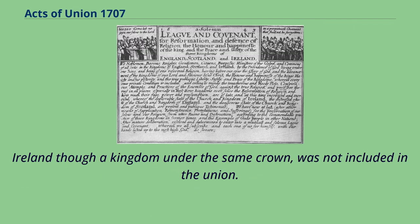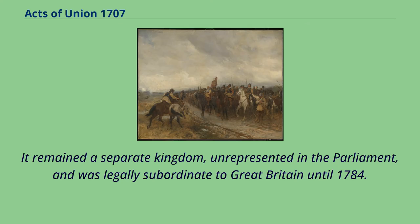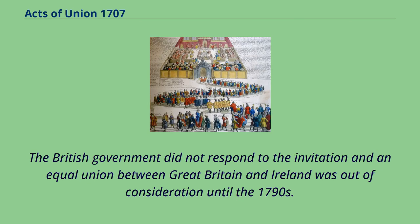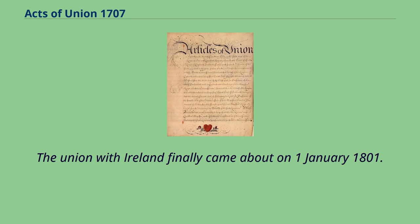Ireland, though a kingdom under the same crown, was not included in the union. It remained a separate kingdom, unrepresented in the Parliament, and was legally subordinate to Great Britain until 1784. In July 1707, each House of the Parliament of Ireland passed a congratulatory address to Queen Anne, praying that God might put it in her royal heart 'to add greater strength and luster to your crown by a still more comprehensive union.' The British government did not respond, and an equal union between Great Britain and Ireland was out of consideration until the 1790s. The union with Ireland finally came about on January 1, 1801.